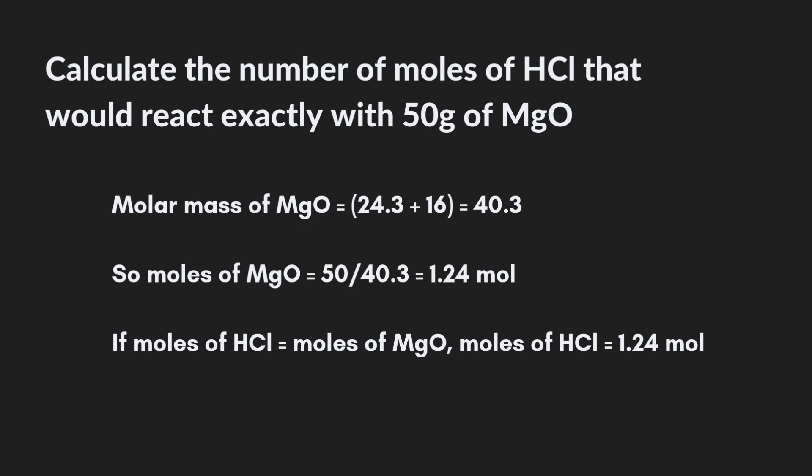To calculate the number of moles of HCl, you'll need to start by working out the number of moles of MgO. So we'd calculate the molar mass of MgO, then do mass divided by molar mass, and that gives us 1.24 moles of MgO. Now if you just then go on and make the assumption that the number of moles of HCl is the same as the number of moles of MgO, you'll get the answer of 1.24 moles.